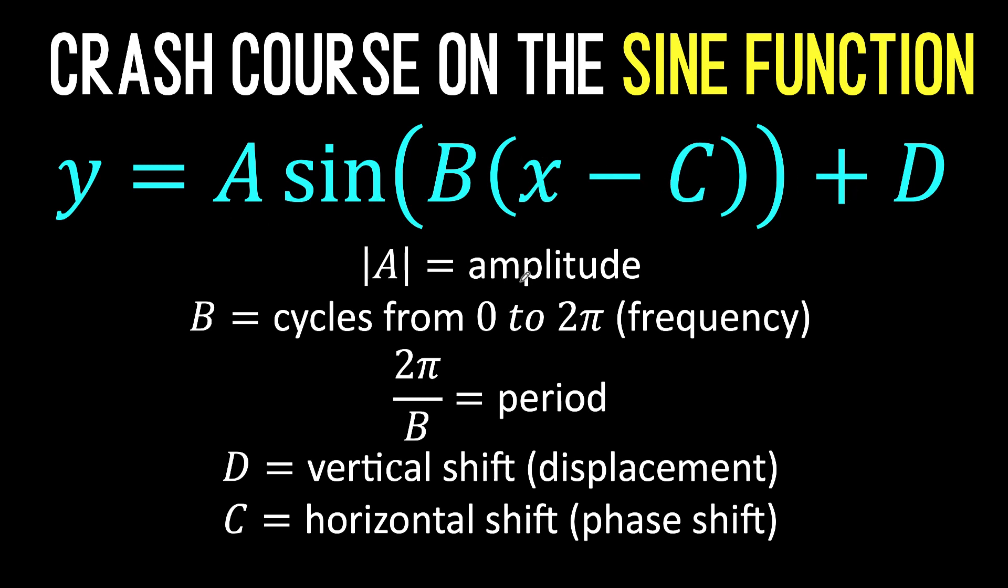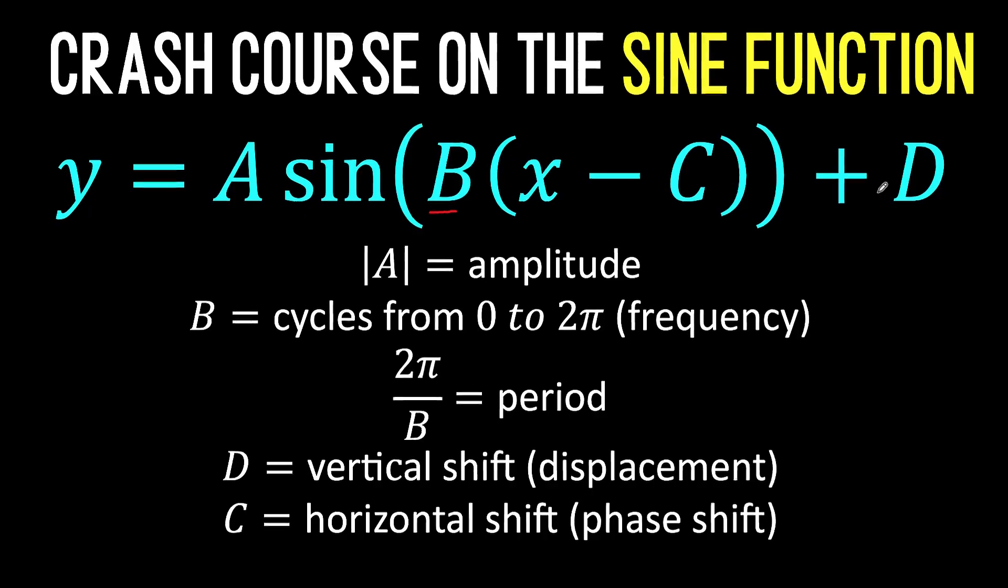In here, A is the amplitude or the height of the graph of the sine function. This B is very important as we create that beating heart animation because this determines the frequency or the number of cycles from zero to 2π. We are not so much after this D in that heartbeat animation. So let's go back to the Desmos graphing calculator.